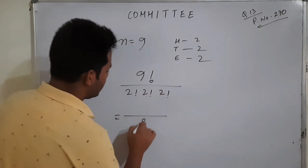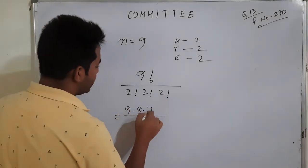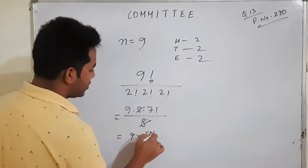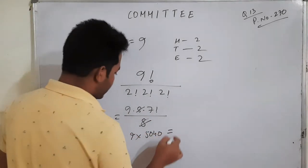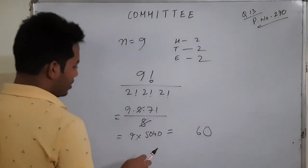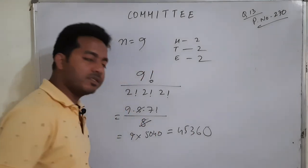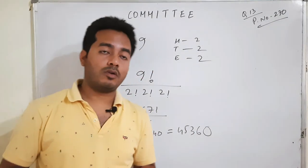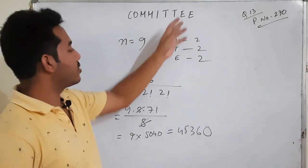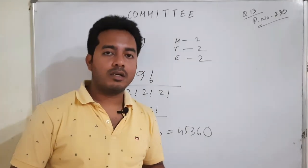So n equals 9. We have 3 pairs of repeated letters. That is 9 factorial divided by 2! times 2! times 2!. Calculating: 9, 7 factorial, 5, 4 — multiply through — giving 45360 words. So the total is 45360 words.